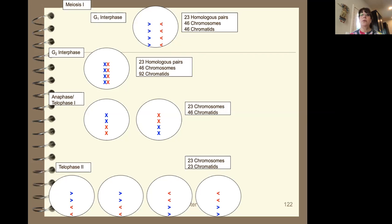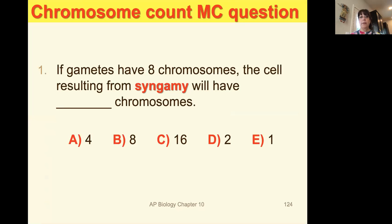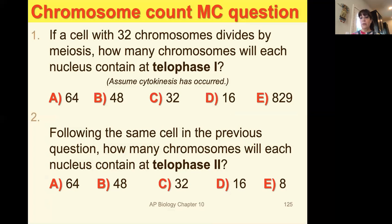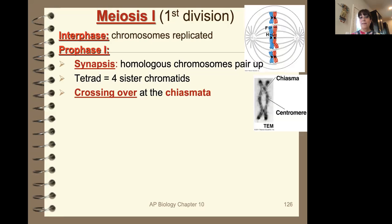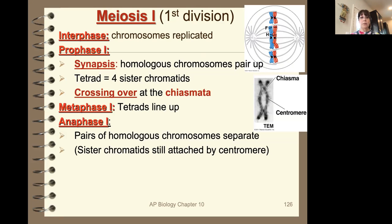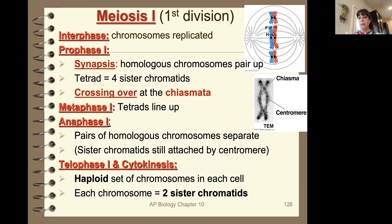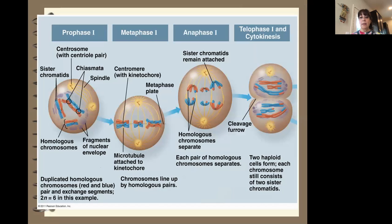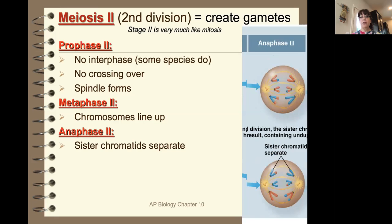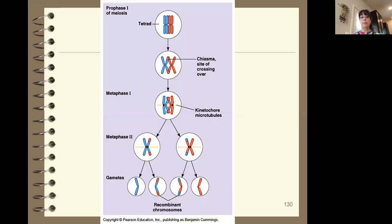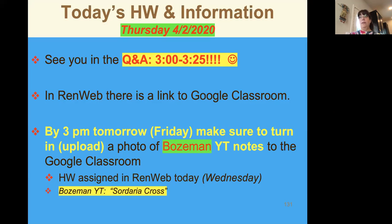Make sure you can count chromosome numbers — we'll watch a video during Q&A and answer those questions. Make sure you can talk about each of the key points and go through all the steps in review. That ends today's lesson. I'll see you from 3 to 3:25 in the Q&A. Don't forget to do your notes for tomorrow on the dihybrid cross. See you at the Q&A!